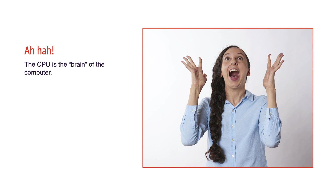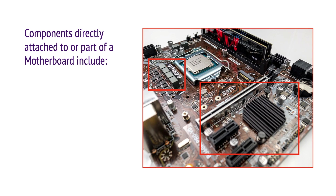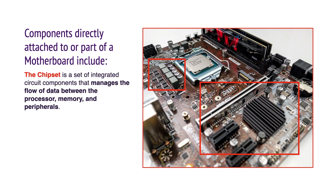The CPU is the brain of the computer, and faster CPU processing speed contributes to a faster computer. Also attached to the motherboard is the chipset, which is a set of integrated circuit components, or chips, that manage the flow of data between the processor, memory, and peripherals.